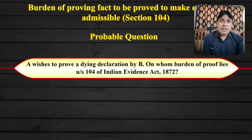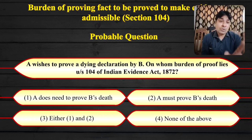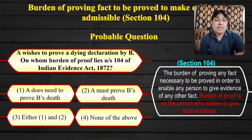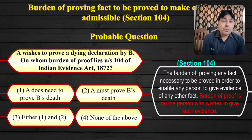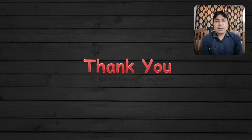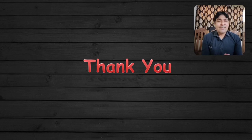Now the probable question on Section 104: A wishes to prove a dying declaration by B. On whom does the burden of proof lie under Section 104 of the Indian Evidence Act 1872? The options are: A does not need to prove B's death / A must prove B's death / either 1 or 2 / none of the above. The burden of proof is on the person who wishes to give such evidence — so A must prove B's death. Option second is the correct answer. So this is the first part of Burden of Proof. I hope you understand this topic. Please subscribe to my channel, hit the notification button, hit the like button, and share this video with your friends. Thank you very much.